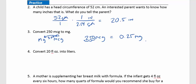The answer is 0.25 milligrams. It's very important in health fields that whenever we write a decimal number, we always write the zero in front — for example, write 0.25, not just .25. It's easy to miss the decimal point without that leading zero.